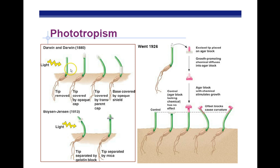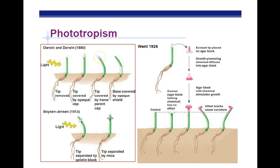There were experiments trying to figure out how plants move toward light. When you remove the tip, the plant doesn't move to the light — giving a clue that something in the tip makes it move. When the tip is covered by something opaque, it still doesn't move. But if the tip is covered by a clear cap, it does still move toward light — showing it's the light itself triggering something in the tip. When the base is covered by an opaque shield, it still moves toward the light.